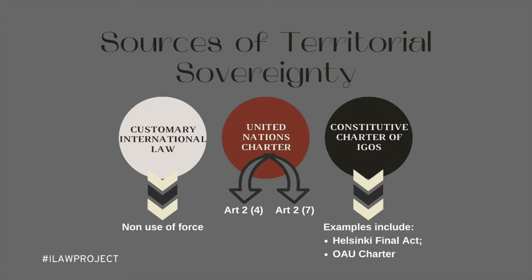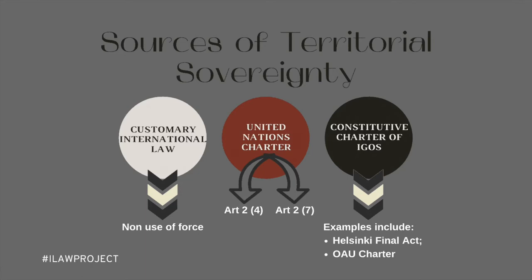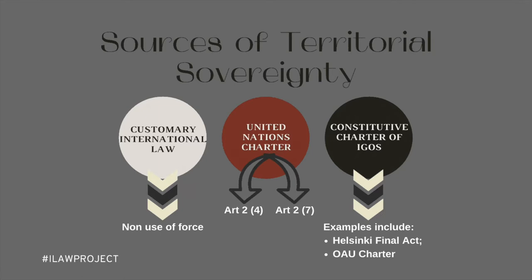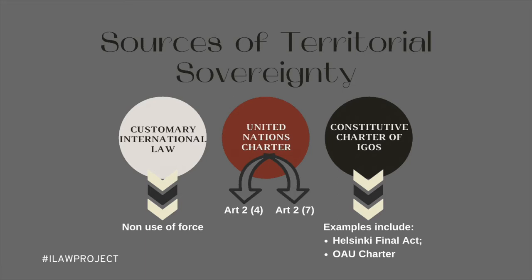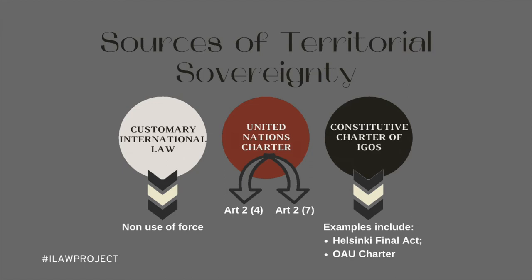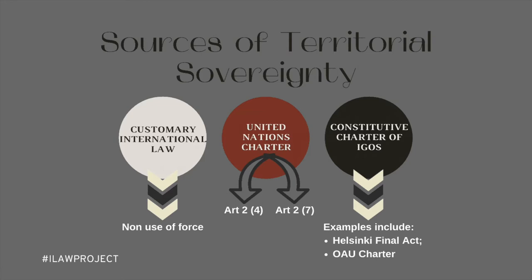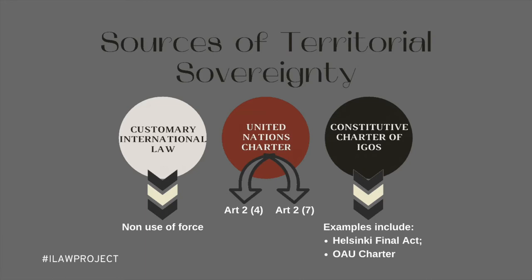On the other hand, Article 2(7) addresses the United Nations and precludes the UN's intervention in matters within the sovereign preserve of nation states. Specifically, it states: nothing contained in the present Charter shall authorize the United Nations to intervene in matters that are essentially within the domestic jurisdiction of another state, or shall require members to submit such matters to settlement under the present Charter — but this principle shall not preclude the application of enforcement measures under Chapter 7. The UN system itself is based on the notion of sovereign equality of all member states as guaranteed in Article 2(1), which states that the organization is based on the principle of the sovereign equality of all its members. Within this normative order, it is sacrosanct that all countries are equal.